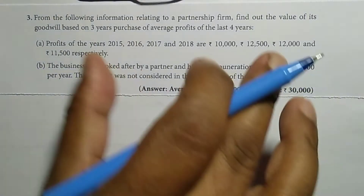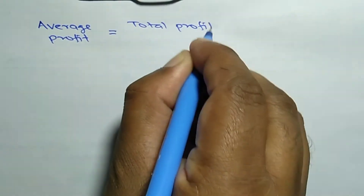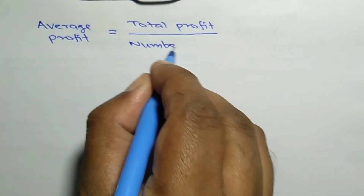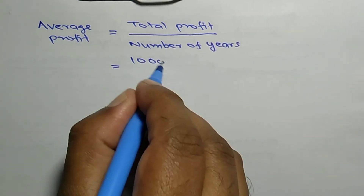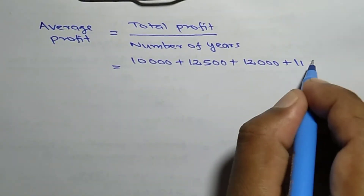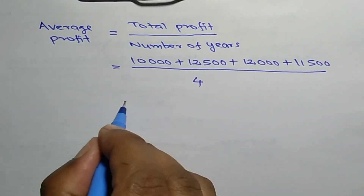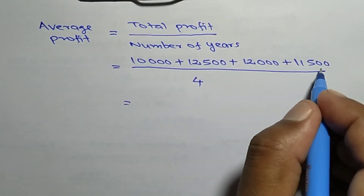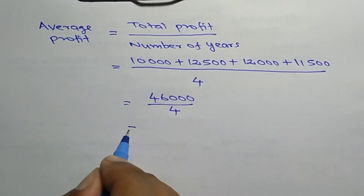First, let's find average profit. Average profit is equal to total profit divided by number of years. Total profit — adding every year's profit — is 10,000 plus 12,500 plus 12,000 plus 11,500.